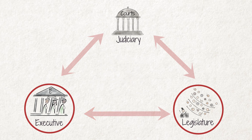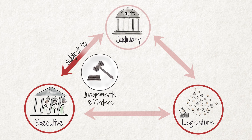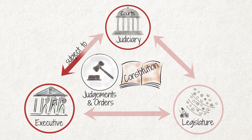The executive is further subject to the judgments and orders of the judiciary. The judiciary can check whether a minister or the president has complied with the Constitution and can declare invalid any action by a minister or the president if the action is in conflict with any provision in the Constitution.